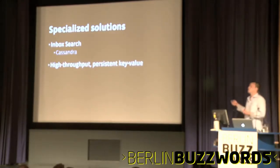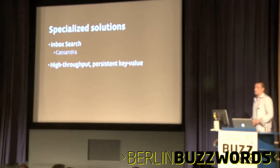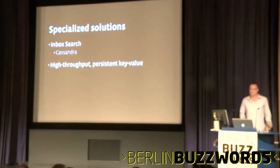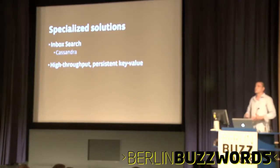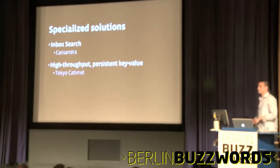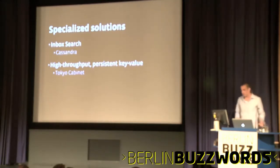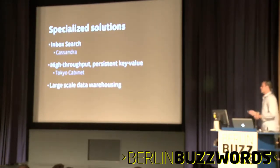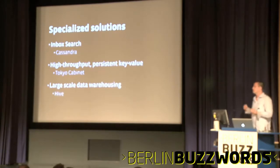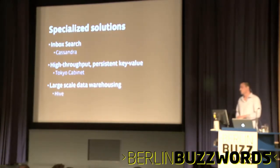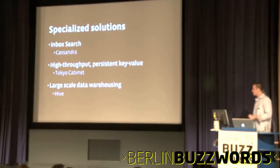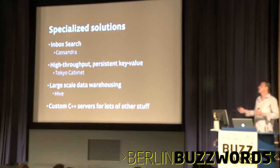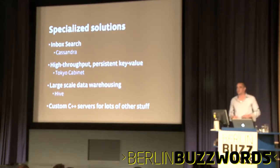Also, high-throughput but persistent key-value: memcache is very high-throughput key-value, but it doesn't persist. Some applications want the persistence, and the throughput is so high you can't use MySQL. So a lot of teams are using Tokyo Cabinet — sometimes on Flash, sometimes on spinning disks. And then for large-scale data warehousing, Facebook implemented Hive, which is now an open-source Apache project that adds a SQL-like layer on top of MapReduce. And then we have lots of custom C++ servers for other stuff.